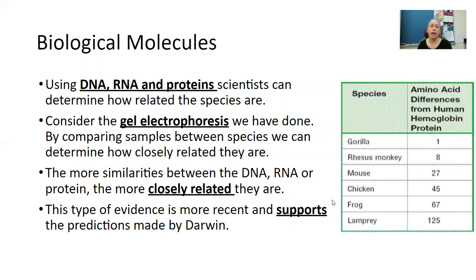We also have biological molecules. We can use DNA, RNA, and proteins — scientists can determine how related species are. Consider the gel electrophoresis we've done. By comparing samples between species, we can determine how closely related they are. The more similarities between the DNA, RNA, or protein, the more closely related they are. This type of evidence is more recent and supports predictions made by Darwin.